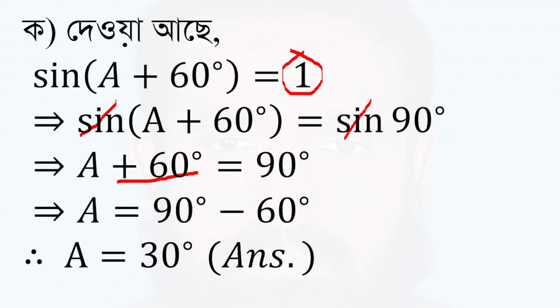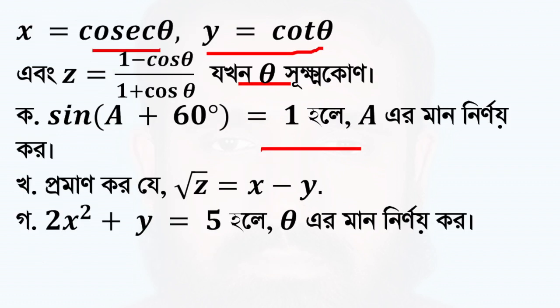Meaning, we can find the value of sin 30°. We have to find the value of sin(a + 30°). So, we have to find the value of sin of 1 minus cos theta by 1 plus cos theta.